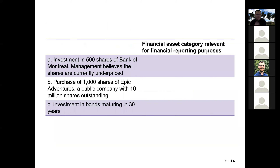Here is a question — you tell me. Which financial asset category is relevant? A: investment in 500 shares of Bank of Montreal; management believes the shares are currently underpriced. Which category? FVPL? FVOCI? Amortized cost? FVPL?